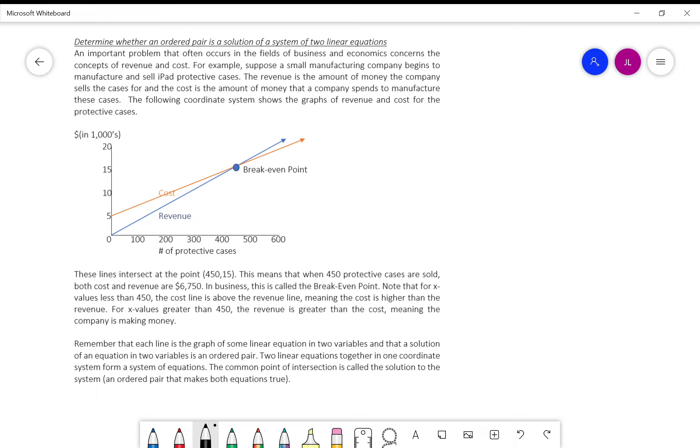We've got a manufacturing company making iPad protective cases. The revenue is shown by the blue line and the cost to make the cases is shown by the orange line. This is quadrant one of a rectangular coordinate grid. Where the revenue and cost lines meet is where we break even, meaning our revenues and costs are equal with no profit.